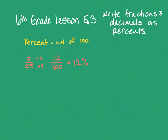So 3/25 as a percent is 12%. For another example, with 3/10, I can see that 10 times 10 is 100, so I multiply both numerator and denominator by 10 — whatever I do to the denominator I must do to the numerator to keep it equivalent. 10 times 10 is 100 and 3 times 10 is 30, so 30 out of 100 is 30%. If you notice your denominator can easily be turned into 100, that's an easy way to do it.